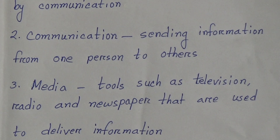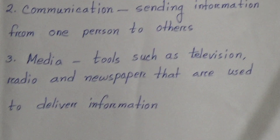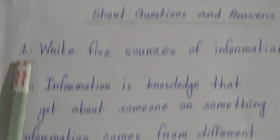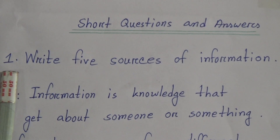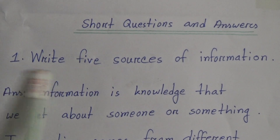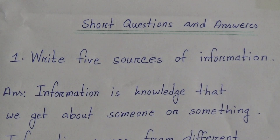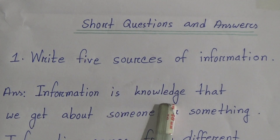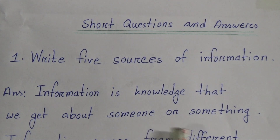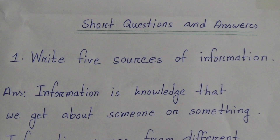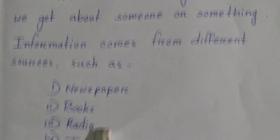Now we will solve the short question and answers. Here is only one short question of this chapter. The question is: Write five sources of information. The answer is: Information is knowledge that we get about someone or something. Information comes from different sources such as newspaper, books, radio, television, and computer.